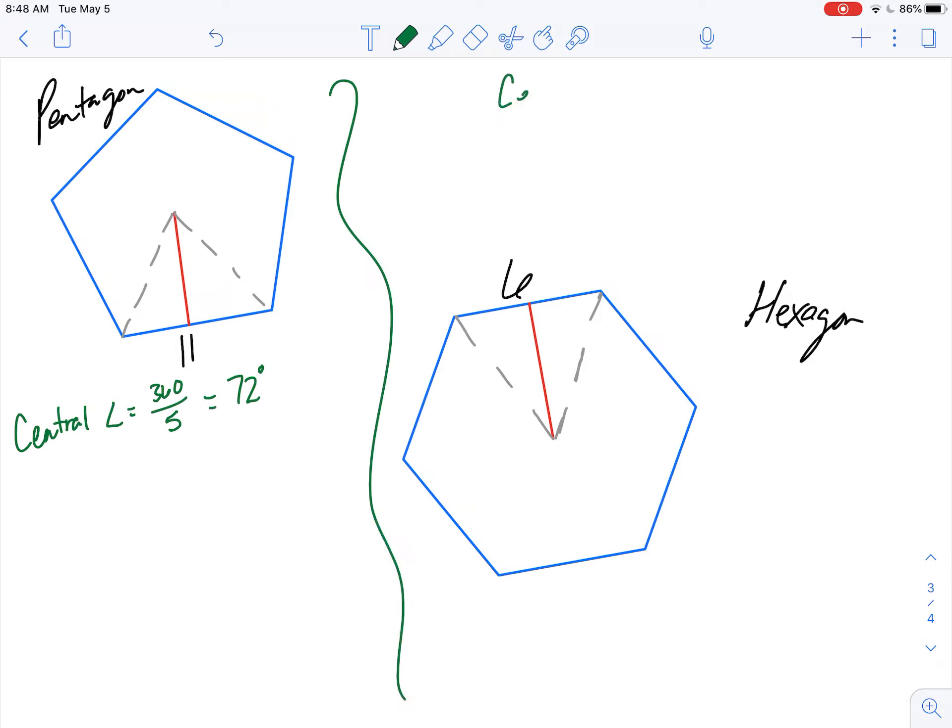Or over here, my central angle equals 360 over 6, which is 60 degrees. Okay, so those are my central angles.